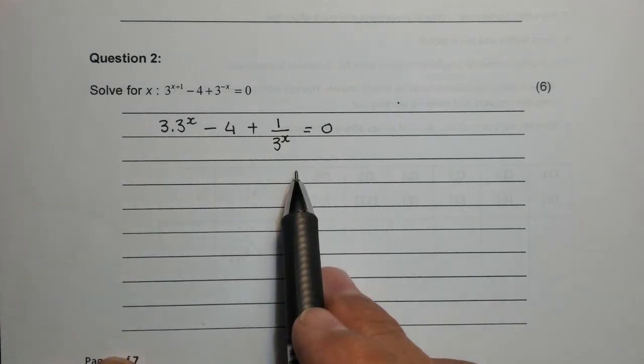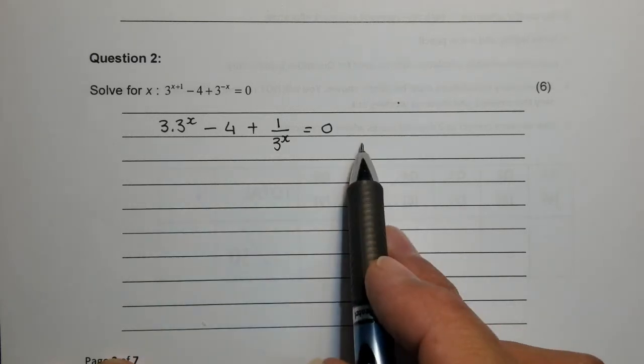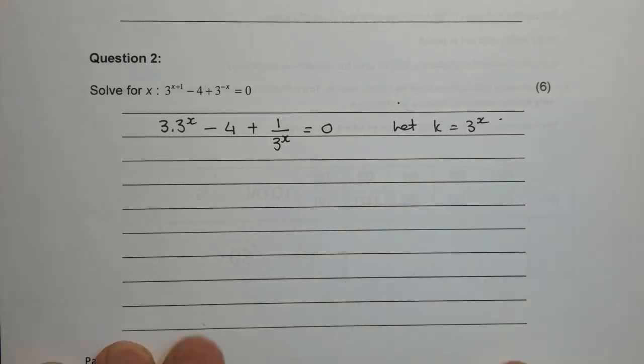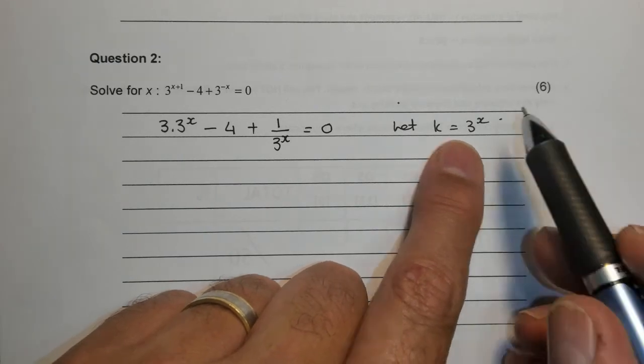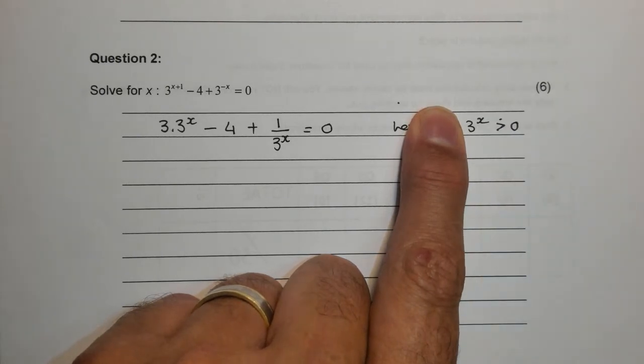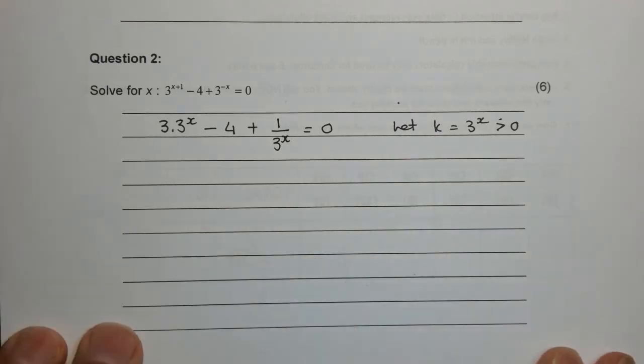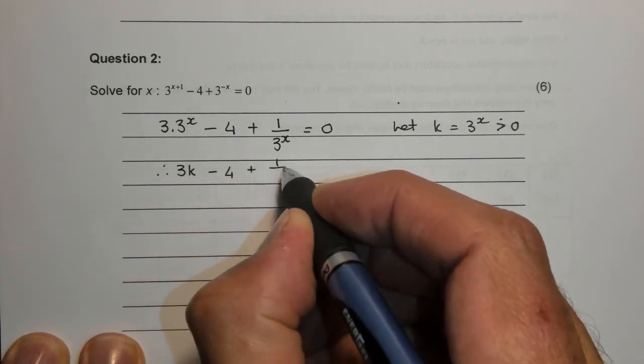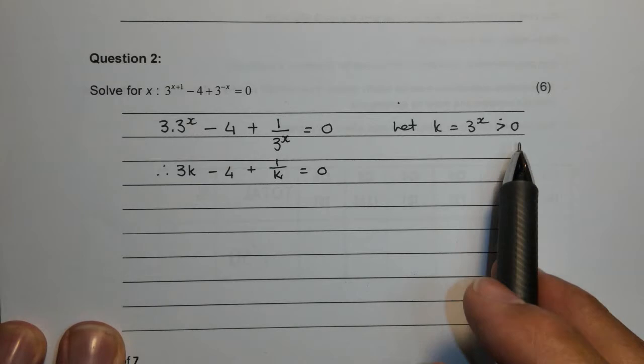Now at this point in time you can see there's a fraction here. So you can get rid of the fraction by multiplying throughout. Or you can choose to substitute. Let k be equal to 3 to the power of x. I think this is going to make your life much easier. Now just remember 3 to the power of x is entirely positive. It's never negative or 0. So whatever k is it has to be positive.